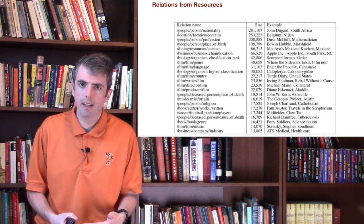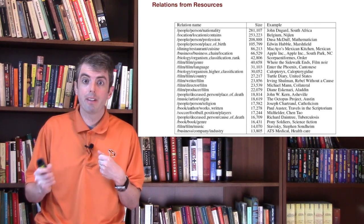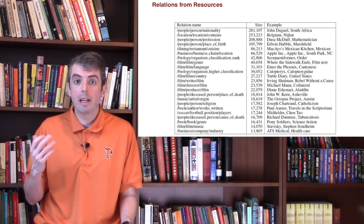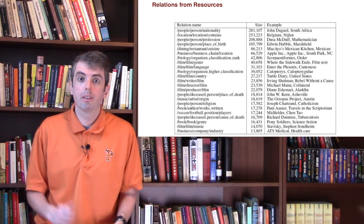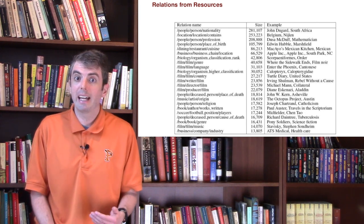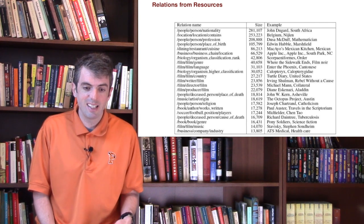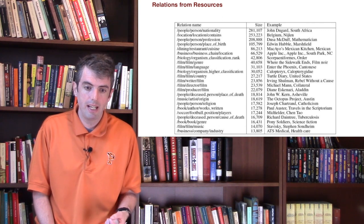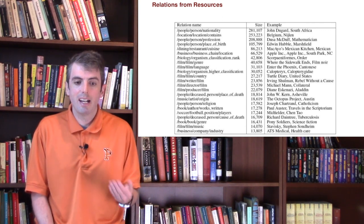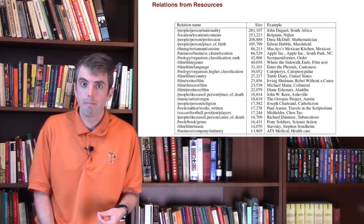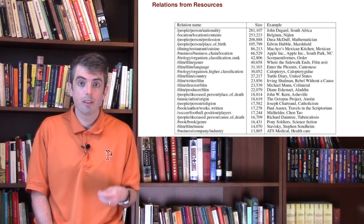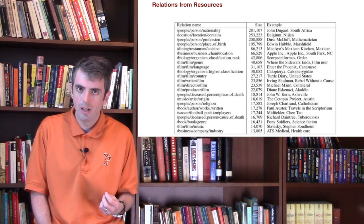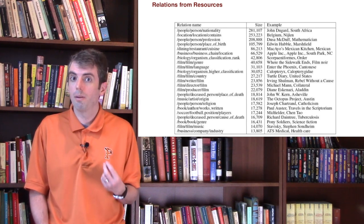Once we can identify entities in text, we now need to have connections between them. This is called relation extraction. We can get some training data from resources like Wikipedia — looking at the info box or the categories of Wikipedia, we can learn things like ATS Medical is a company that works in the healthcare domain, or Where the Sidewalk Ends is an example of a film noir movie. These are very high-precision facts we can extract from databases, but the recall is relatively low. So can we use natural language text to improve our recall?